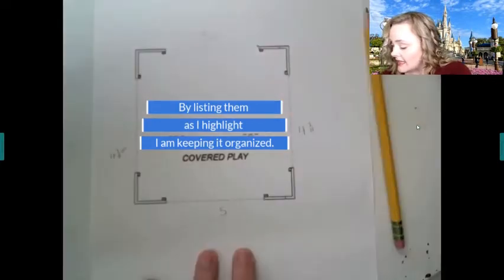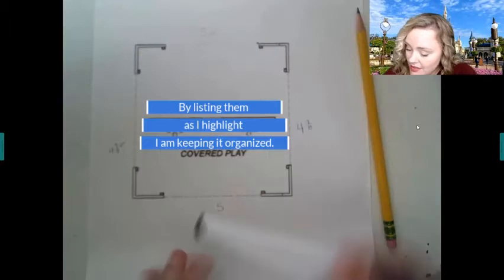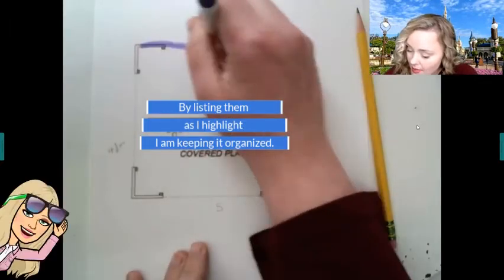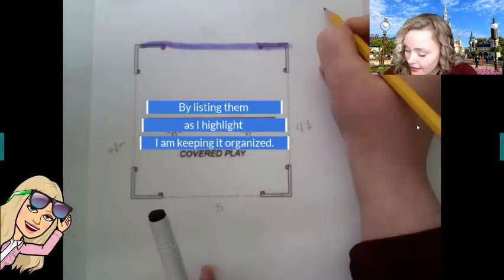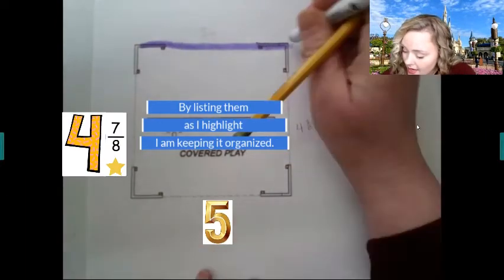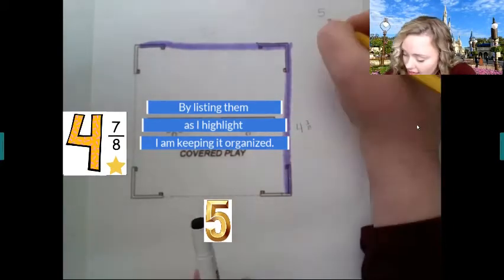So to find perimeter we add all the sides, so I'm going to start here. This side is five, so I'm just going to drag my highlighter right across that and I'm going to write a five right here. And then I'm going to come down, and then four and seven eighths.